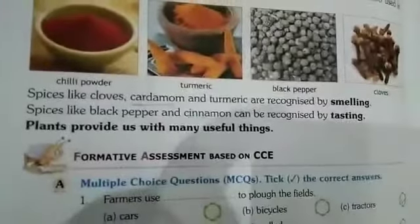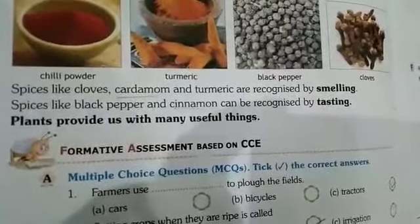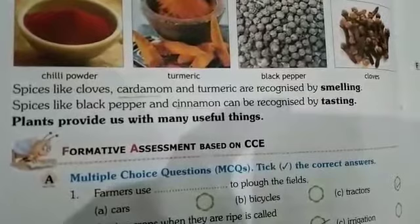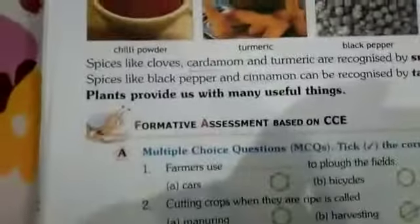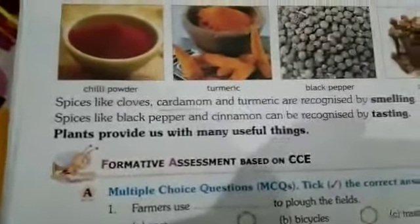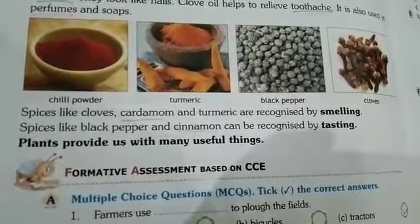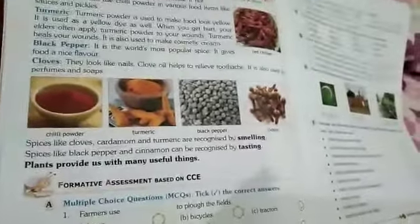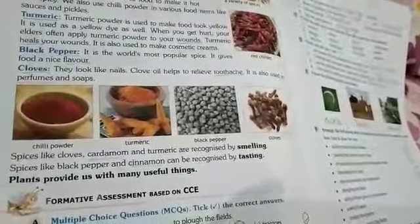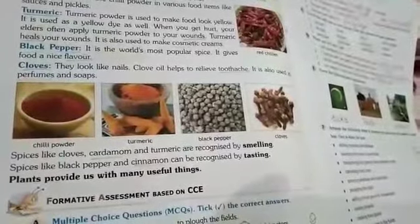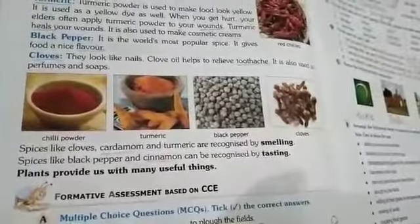Students, some spices like cloves, cardamom, and turmeric we can recognize by smelling, while black pepper and cinnamon can be recognized by tasting. Plants give us many useful things which are helpful in our life. Since you are at home, ask your mother for the spices she has in her kitchen and learn their names. Thank you.